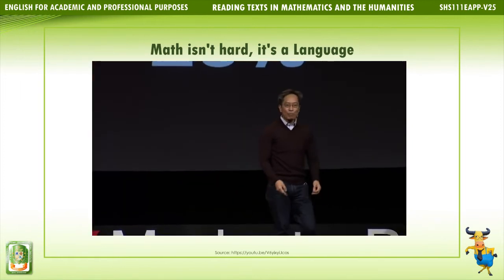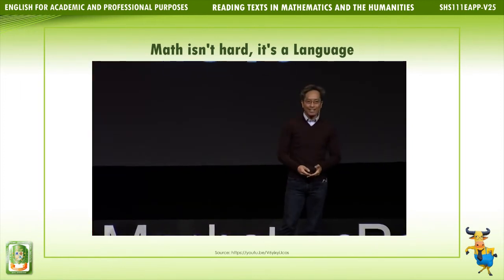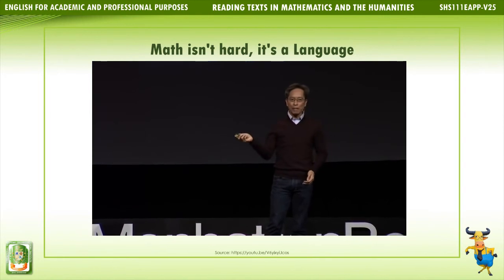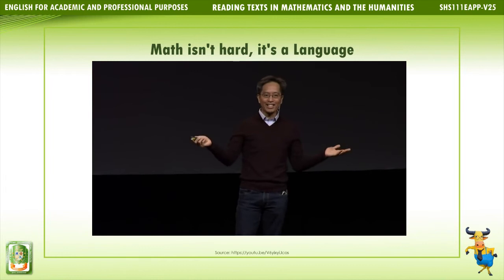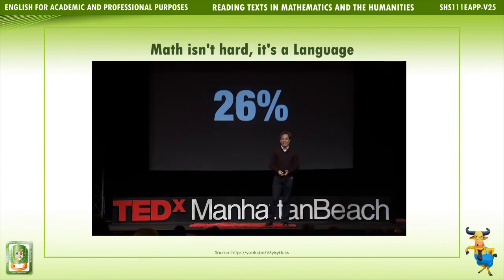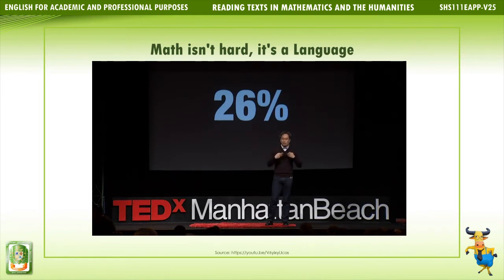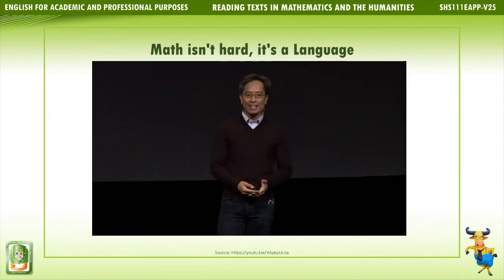Kids don't understand math because we've been teaching it as a dehumanized subject. But if we made math human again, it would start to make sense again. You're probably wondering, how was math ever human in the first place? Math is a human language, just like English, Spanish, or Chinese, because it allows people to communicate with each other. Even in ancient times, people needed the language of math to conduct trade, to build monuments, and to measure the land for farming.